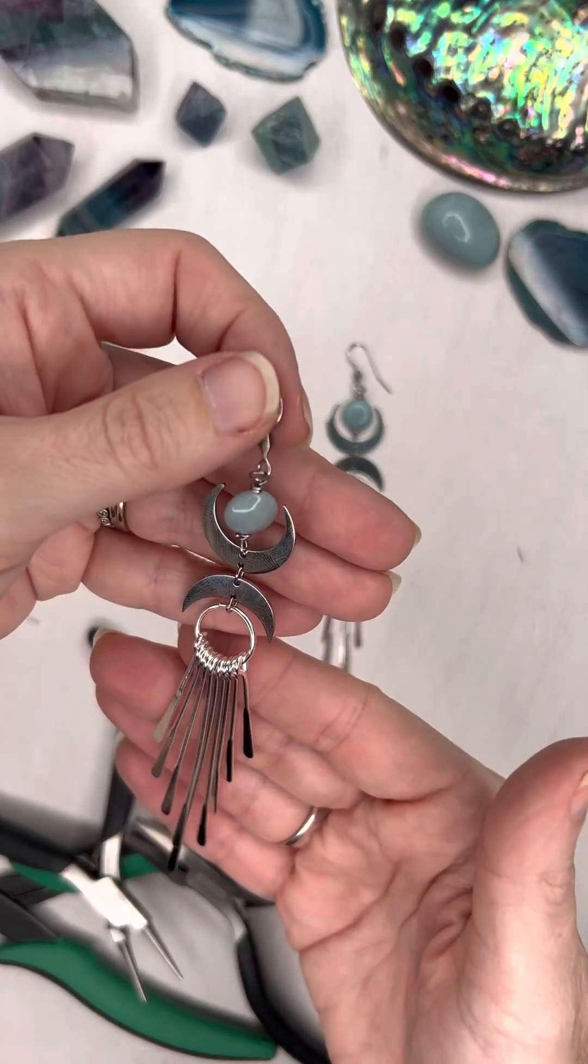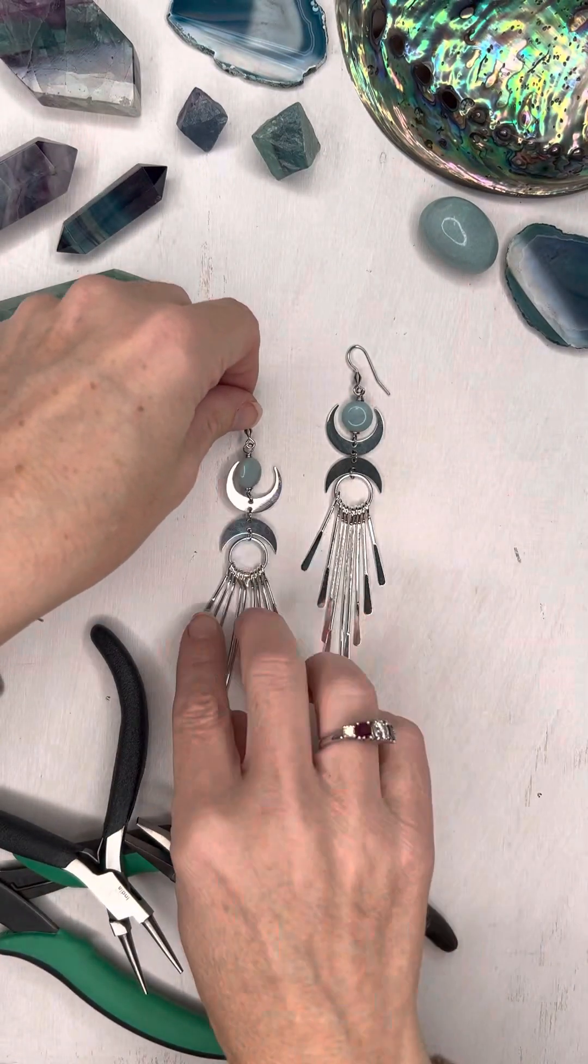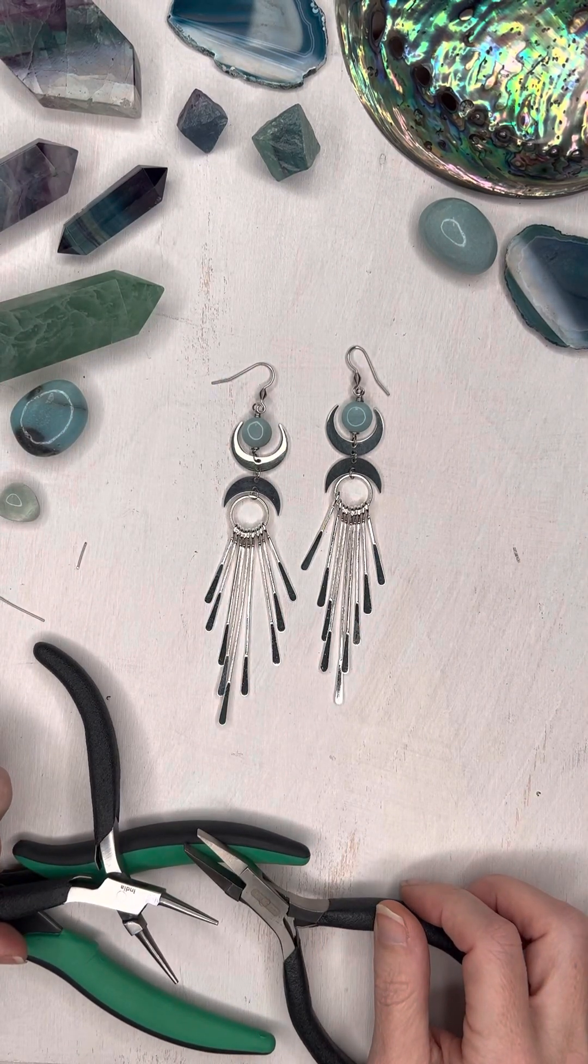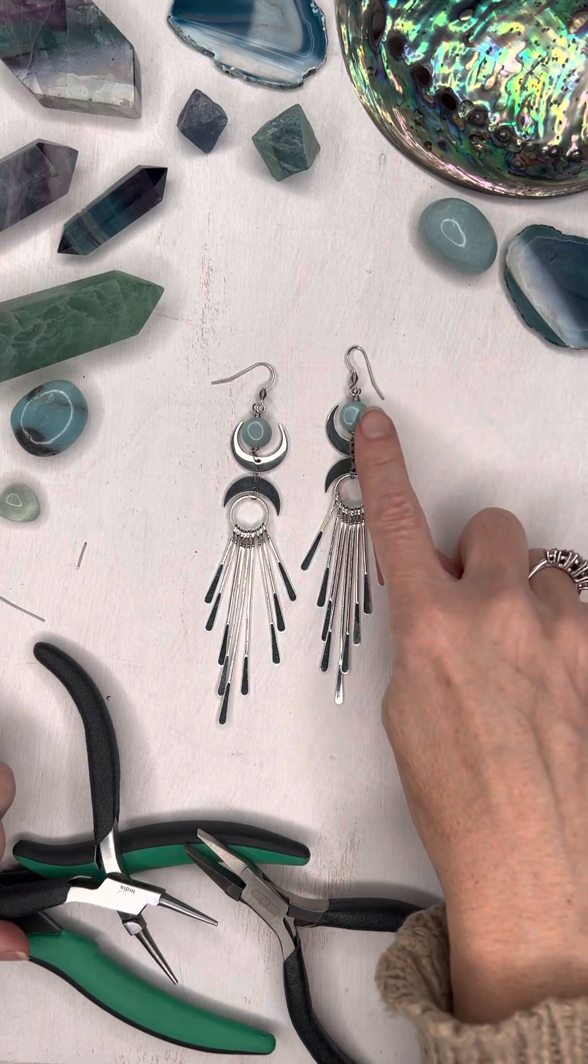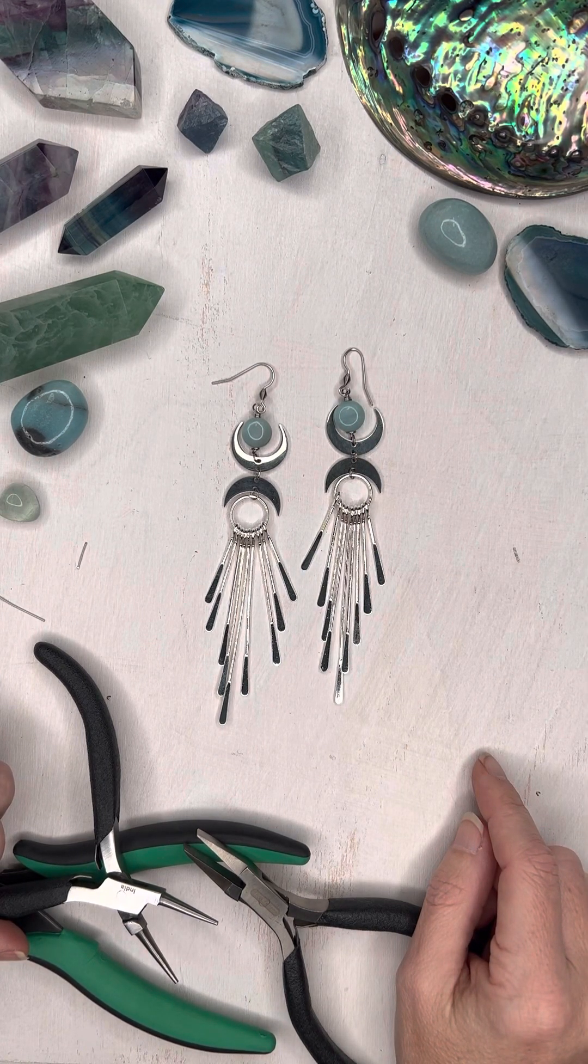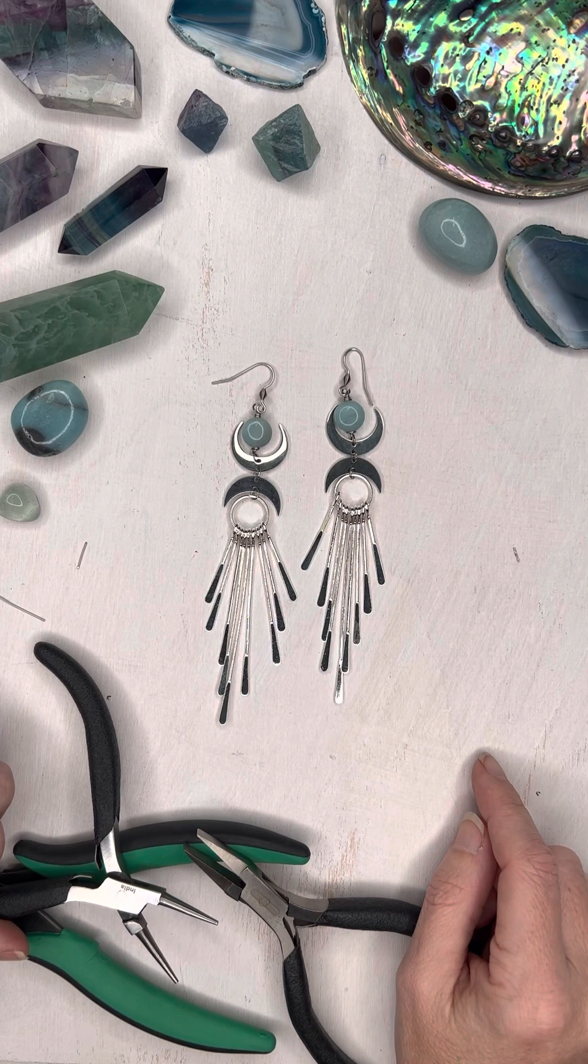And there's my earring. All the supplies can be found at cherrytreebeads.com. And we have lots of other coin stones that are 10 millimeter that will fit in there if Amazonite is not your stone. Thanks so much.